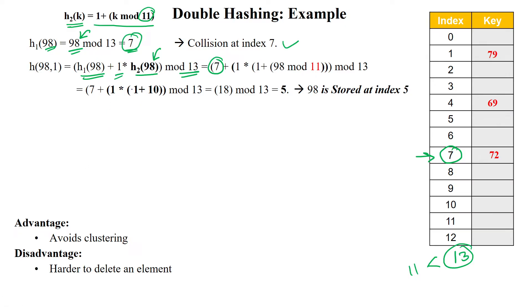With i = 1, we calculate: h1(98) = 7, and h2(98) = 1 + (98 mod 11) = 1 + 10 = 11. So the probe gives 7 + 1 × 11 = 18. Then 18 mod 13 = 5. Index 5 is empty, so 98 is stored at index 5. This is how double hashing resolves collisions.